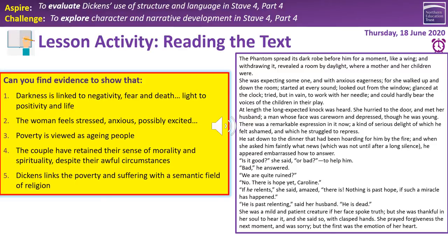Let's start with the first one: darkness is linked to negativity, fear and death; light to positivity and life. We go from this scene with Scrooge agonised and in pain, beseeching the spirit — its dark robe before him for a moment like a wing — then we see a room by daylight with a mother and her children. So we go from a room of death and darkness to a room of daylight and life. We have a mother and her children. So this is very much a clear idea of death to life, age to youth.